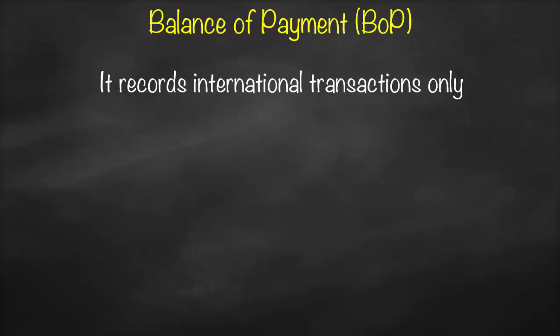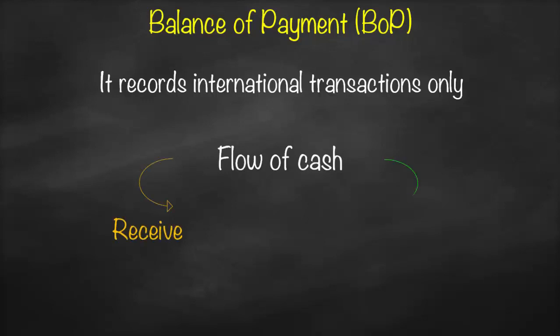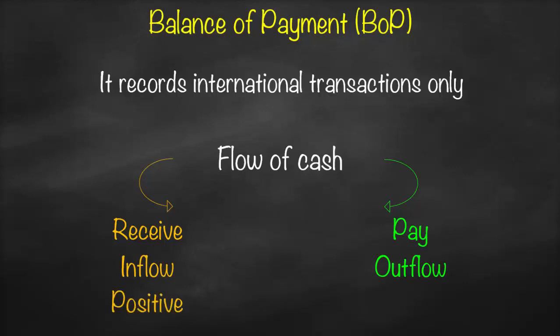Once we deal with other countries, how do we report it? It will be based on the flow of cash — either we receive cash or we pay cash. If we receive cash, it's called inflow and we assign a positive number. If we pay cash, it's called outflow and we assign a negative number.